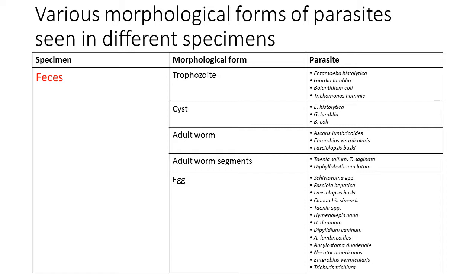Eggs are normally seen in nematodes, cestodes, and trematodes. Examples include Schistosoma egg, Taenia species egg, Hymenolepis nana, Hymenolepis diminuta egg, Ascaris, Hookworm, Enterobius vermicularis, and Trichuris trichiura eggs, all seen in stool samples.